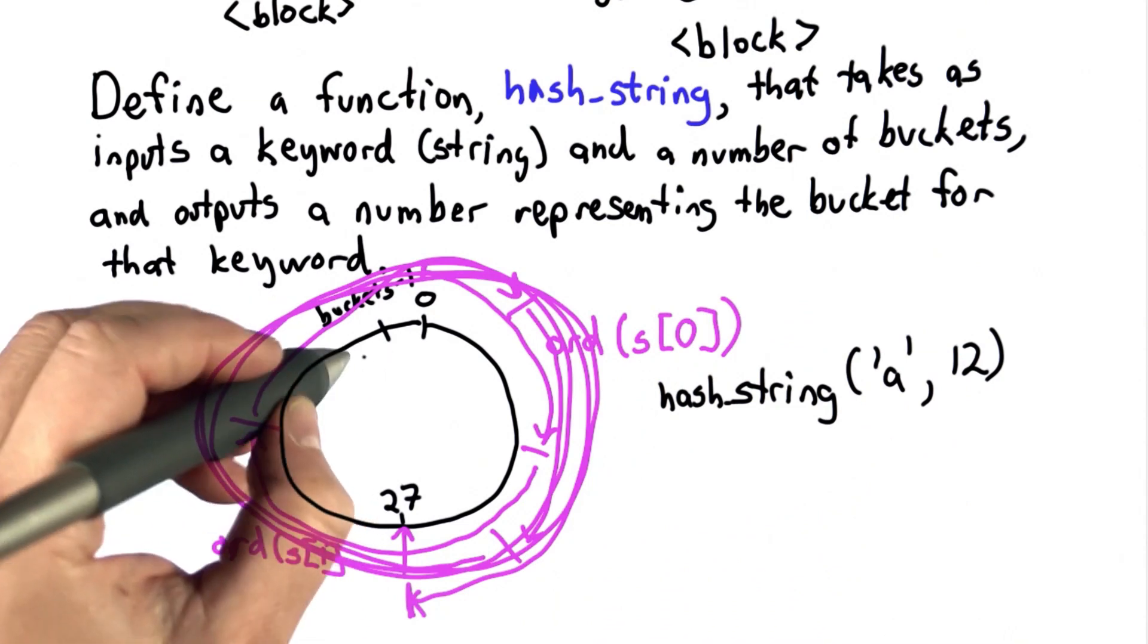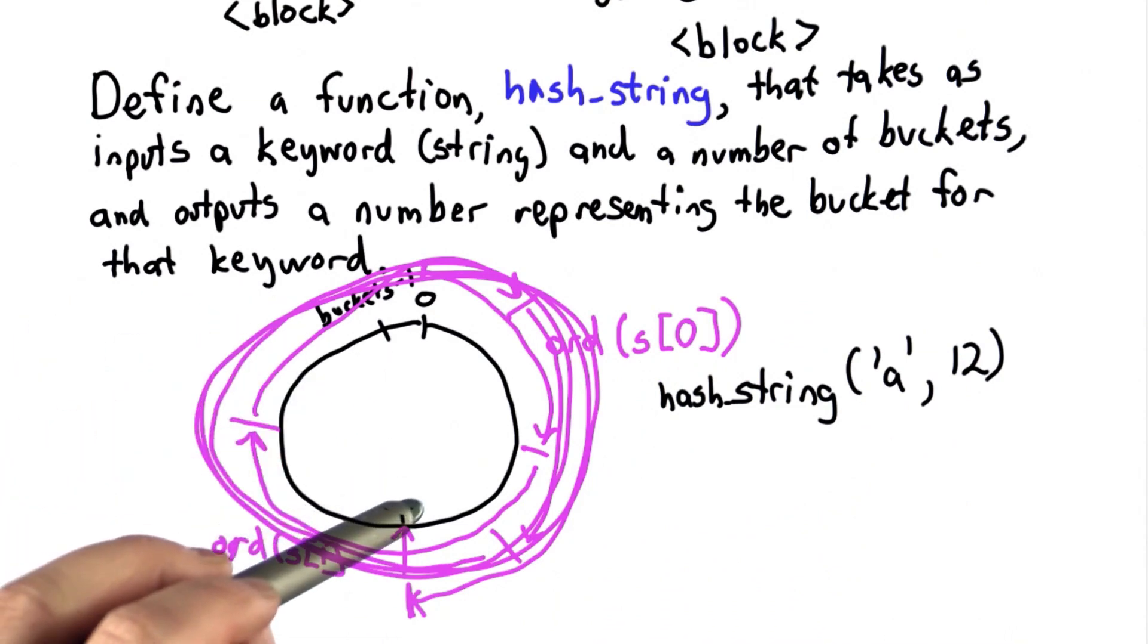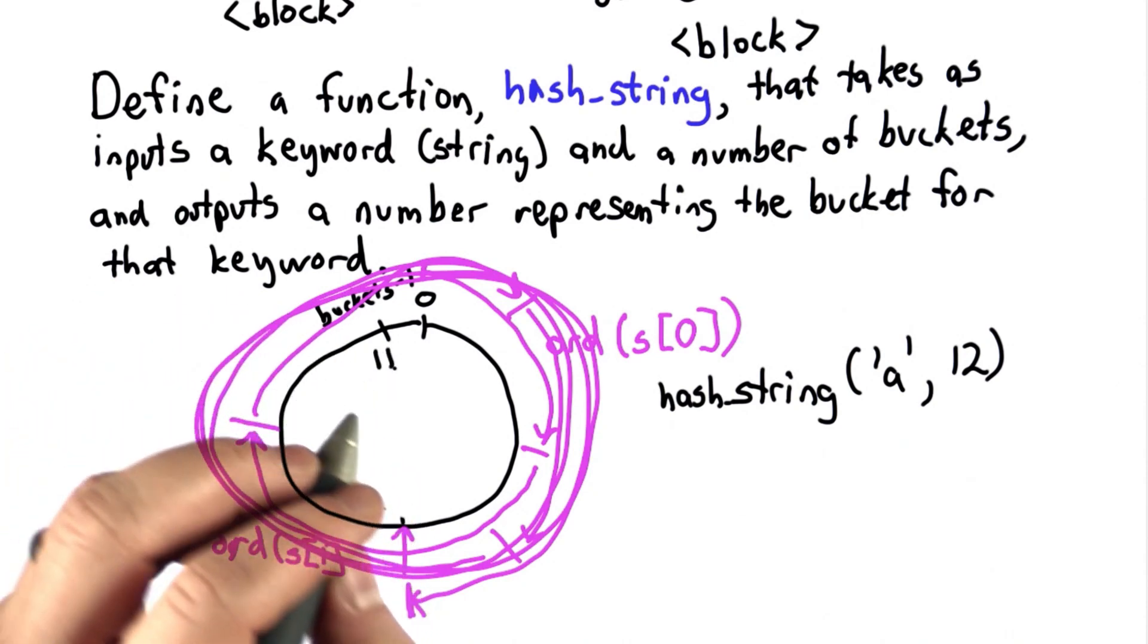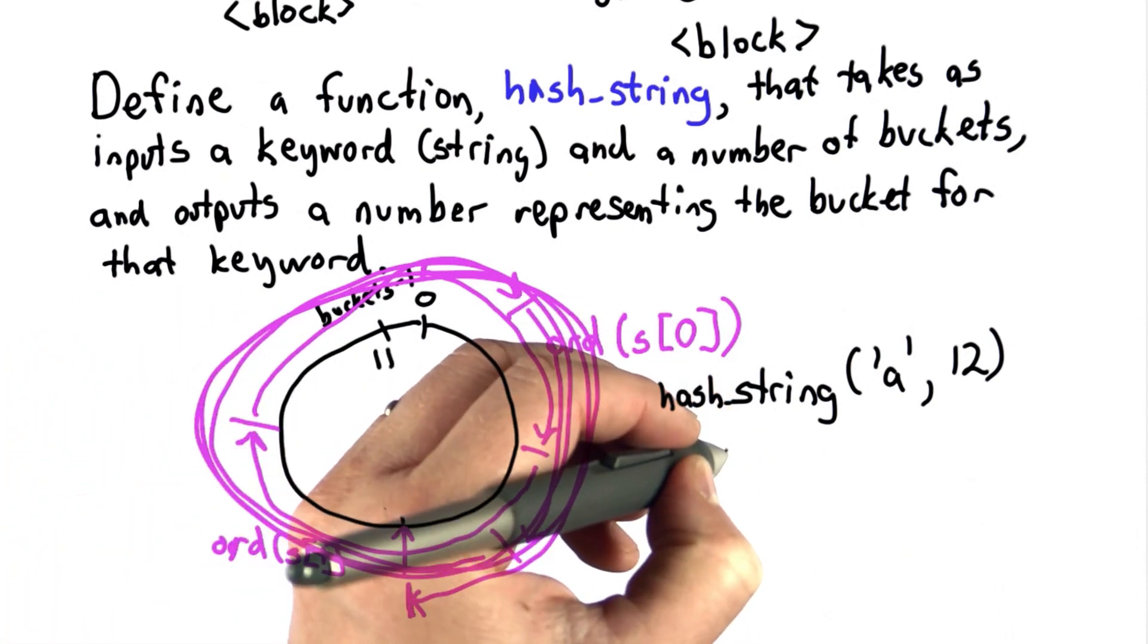In that case we're going to have 12 buckets, so we wouldn't have 27 here. This is going to be 11 as the last bucket. The ord value of A is 97.